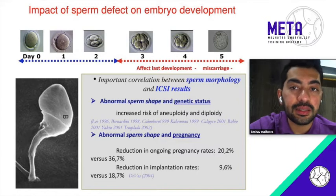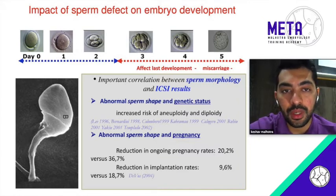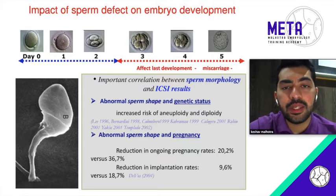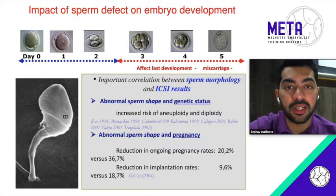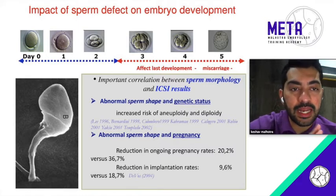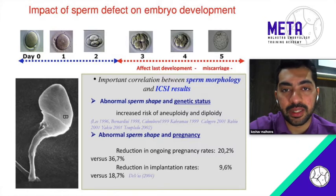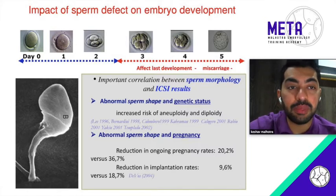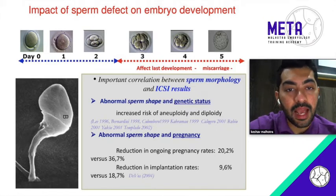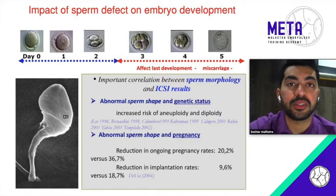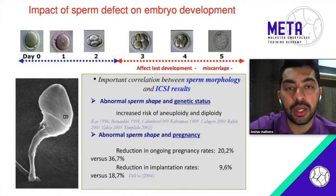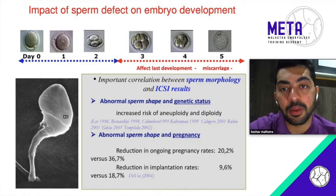Morphology does have an effect on embryonic development. Normally what we think is that the sperm starts contributing to embryonic development after it crosses the eight-cell stage, when the paternal genome basically switches on. But that's not true — it has been shown that morphology starts to play a role right from the fertilization process itself, all throughout embryonic development and even through embryonic implantation.